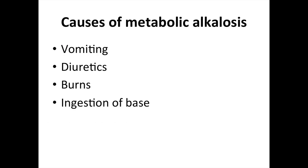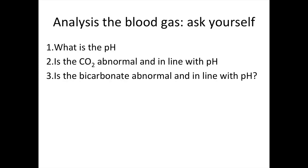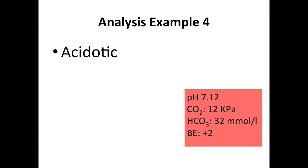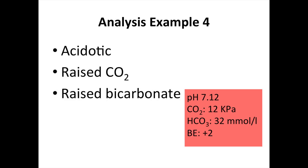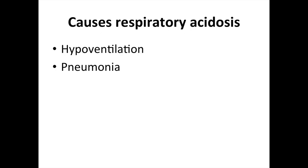Causes of metabolic alkalosis include vomiting, diuretics, burns, or ingestion of an alkaline. Example 4: pH 7.12, carbon dioxide 12, bicarbonate 32, base excess of plus 2. The pH is acidotic. There is a raised carbon dioxide, which is in line with the pH — so you've got a respiratory cause for the acidosis. And there is a raised bicarbonate, indicating metabolic compensation, trying to add alkali into the acidotic situation. Causes of respiratory acidosis include hypoventilation and pneumonia.